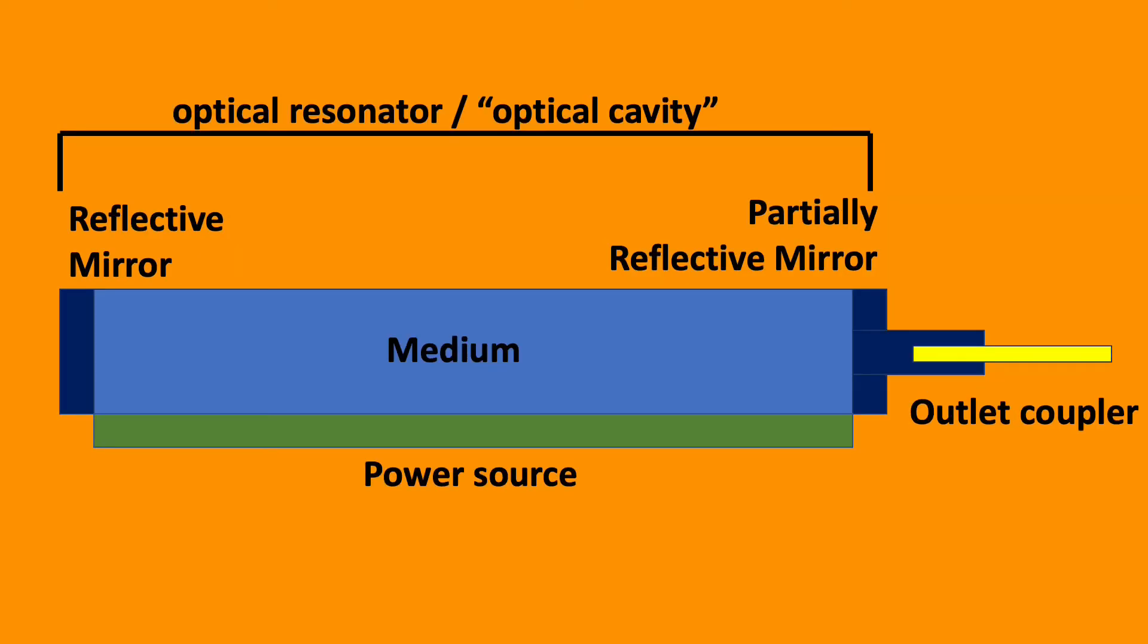There are three main components in a laser: the energy source, the medium and the optical resonator. The energy source, this could be another laser, a diode, a chemical reaction or a high voltage discharge.